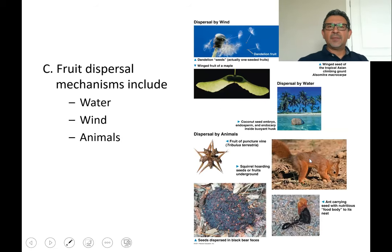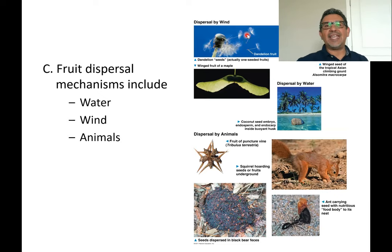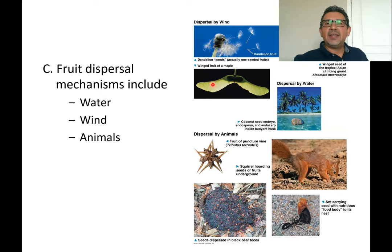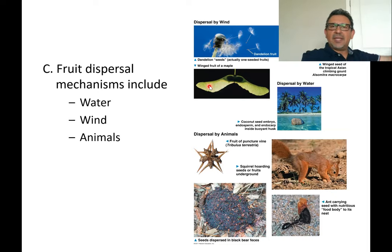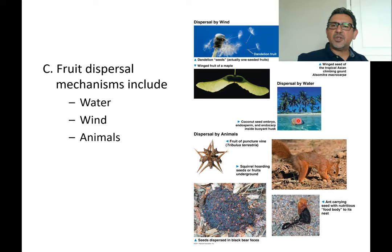Because the purpose of a fruit is to carry seeds away from the parent plant, there are various dispersal mechanisms. A dandelion's achene — spelled A-C-H-E-N-E — is an example of a fruit carried by wind using little filaments that act like wings. A maple tree's fruit has wings that help it be carried away by the wind as well.